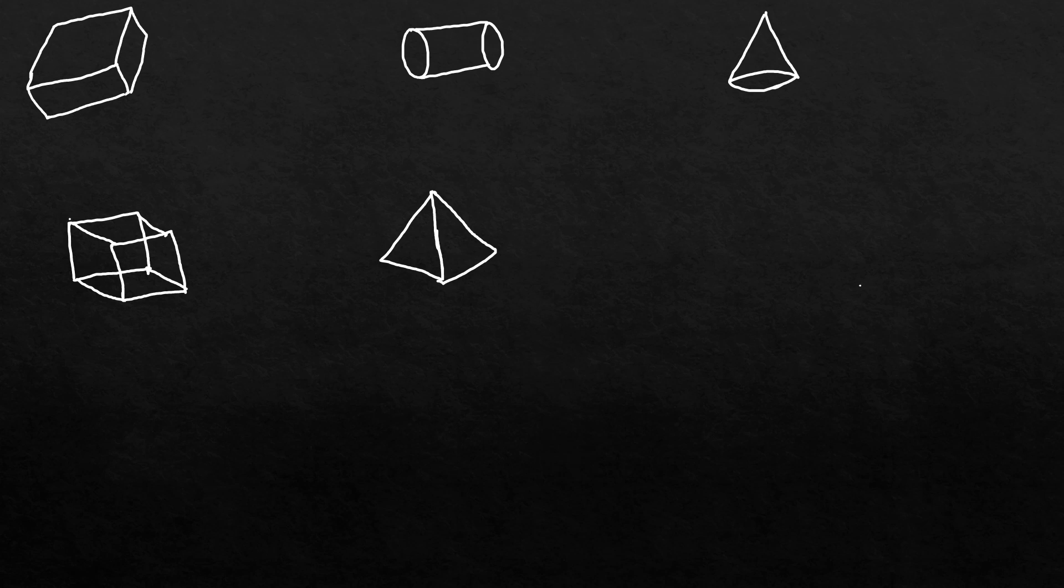This first one is a cuboid. A cuboid has six faces, and this is the vertex. This is the face, and this is the edge. This is the face, and this is the edge. This is a cuboid.